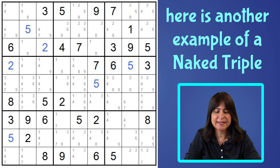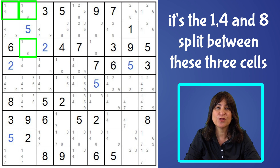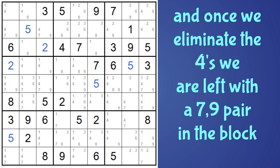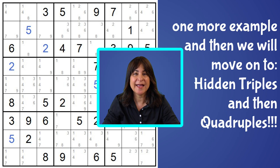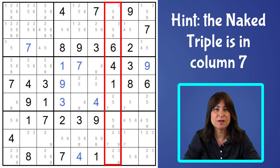Here's another example of a naked triple, this time in block one. The one, four, and eight are split between these three cells as the only candidates for those cells. So they have to be in one of those three cells, and therefore there can't be any other ones, fours, or eights in block one. So we can eliminate this four and this four, leaving us with a seven-nine pair in the block. Can you find the naked triple in this next example? This time it's in a column — take a look at column seven.